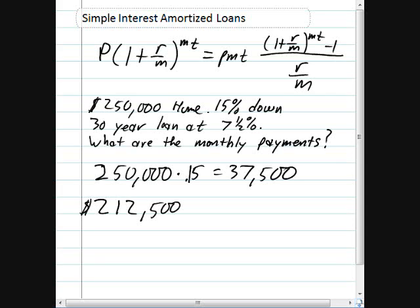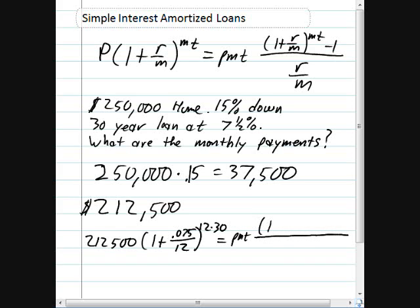Now what we need to do is we need to fill in the formula above and solve for payment. So $212,500 times 1 plus r, 0.075, over m monthly payments, raised to the m times t, equals what we're solving for, payment times 1 plus r over m, raised to the m times t, minus 1, all over r over m.